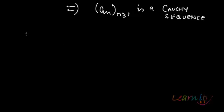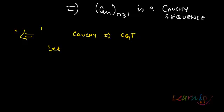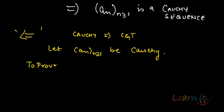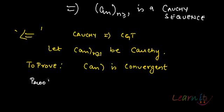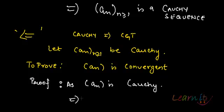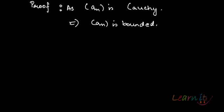Now let's do the other way around. We need to prove that Cauchy implies convergence. Let a_n be a Cauchy sequence. We need to prove a_n is convergent. By the previous lemma, this implies that a_n is bounded, so at least we know the sequence is bounded for sure.